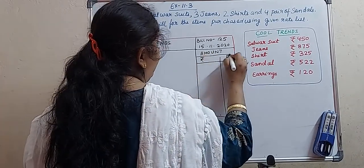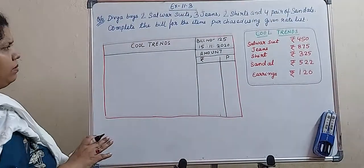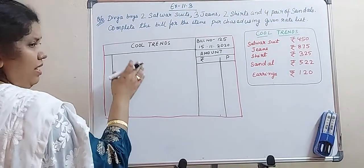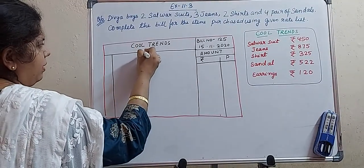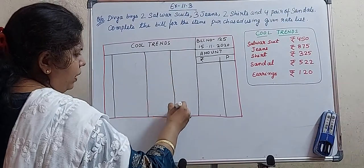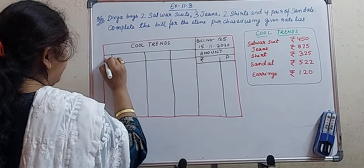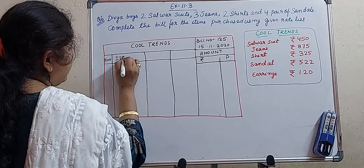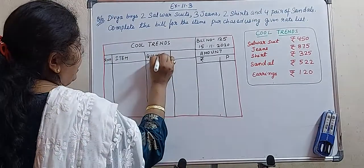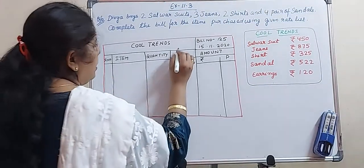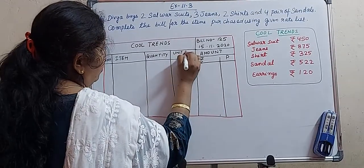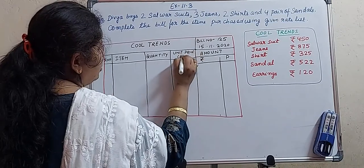Now we will fill the other columns. The first column is the SL number — make a thin one. Then you have to make a column for the name of the items, which will be a little thicker. Then divide the rest into two halves: one for quantity and another for unit price. Unit price means the cost of each single item, written in rupees.